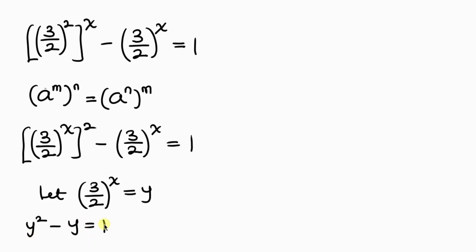We're going to move 1 to the left-hand side. So we have y squared minus y, and as 1 crosses to the left it becomes minus 1, equal to 0.